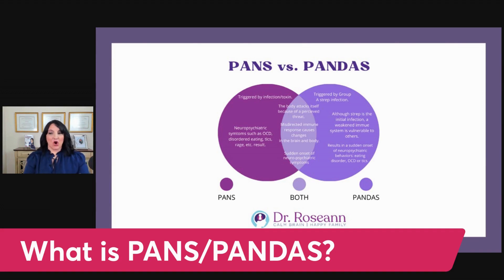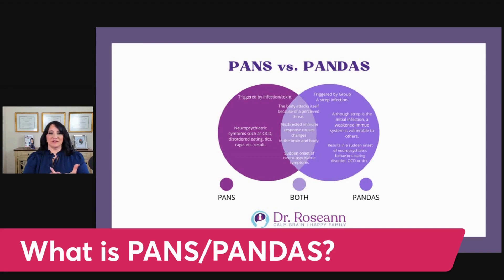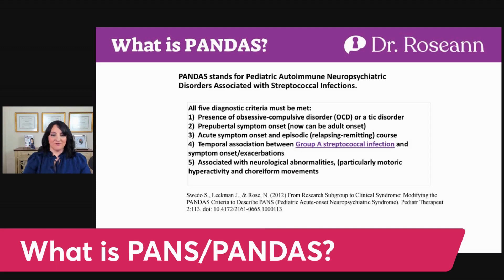PANS and PANDAS have a lot in common, but ultimately they have a sudden onset and are caused by different things. Autoimmune encephalopathy is part of this picture, but it doesn't have a sudden onset. PANS and PANDAS share many of the same symptoms with autoimmune encephalopathy but have different sources. PANS and PANDAS involves a sudden onset or a huge acceleration of a pre-existing condition.